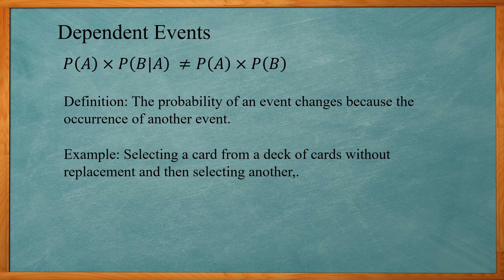Dependent events are those where the probability of an event changes because of the occurrence of another event. For example, selecting a card from a deck without replacement and then selecting another. If I select one card — say the King of Hearts — when I go to select the second card, there are only 51 cards left in the deck, which changes the probability of the next card I select.